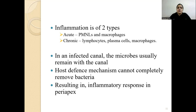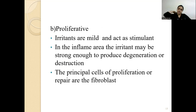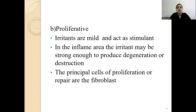In an infected canal, microbes usually remain within the canal. Host defense mechanisms cannot completely remove bacteria, resulting in an inflammatory response in the periapical region. Following inflammation, two types of changes can occur: degenerative changes and proliferative changes. Degenerative changes include fibrous, resorptive, calcified changes and liquefaction. In proliferative changes, irritants are mild and act as stimulants. When the irritant is strong, degeneration or destruction occurs. The principal cells of proliferation and repair are the fibroblasts.